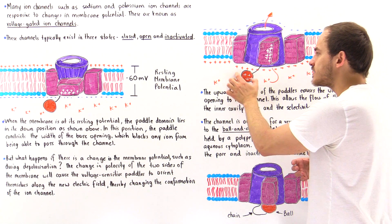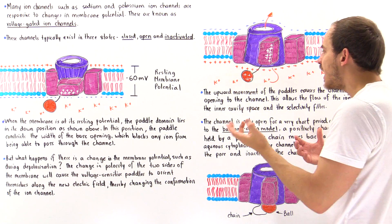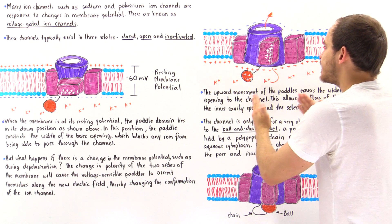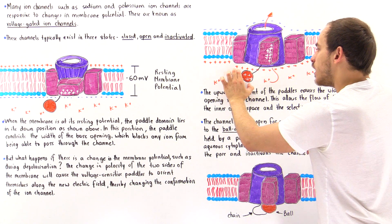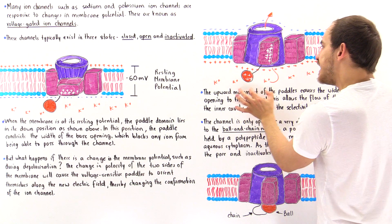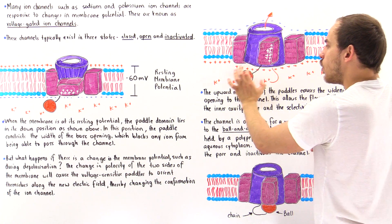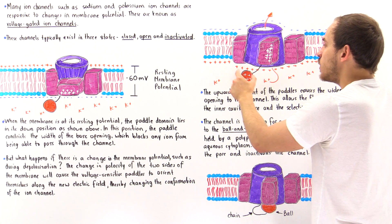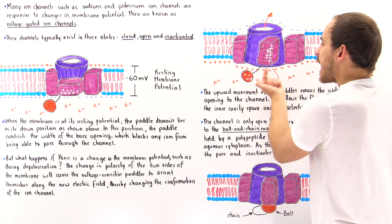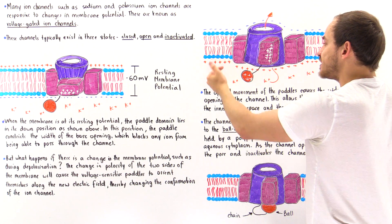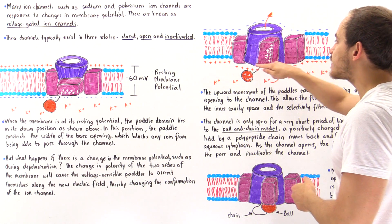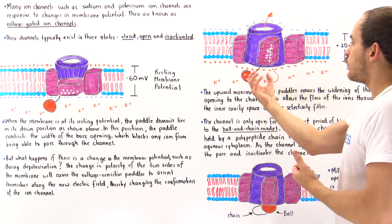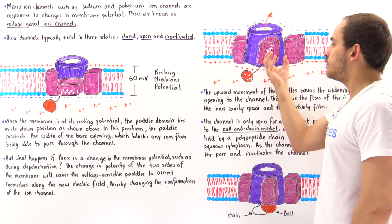Why does the ball move into the pore? Because as many molecules rush into the channel, that drives the movement of the ball into the pore — but the ball cannot fit into the cavity, so it ends up blocking the pore. Once inactivated, even though the upper section is still open, the ball blocks the pore and ions cannot move through that channel.